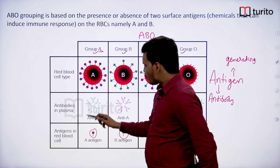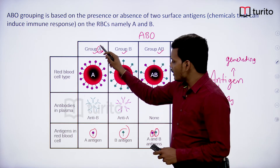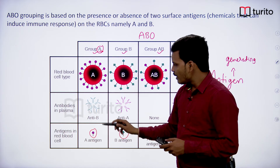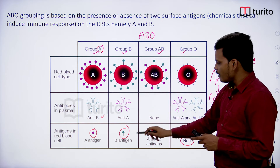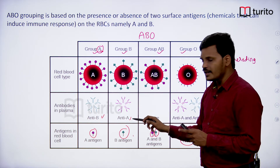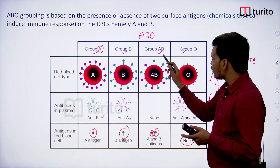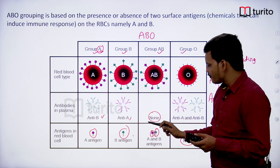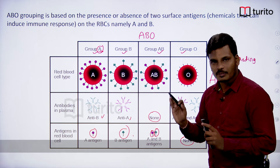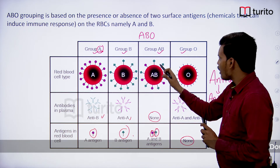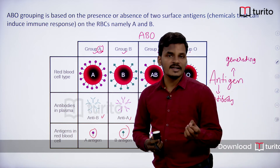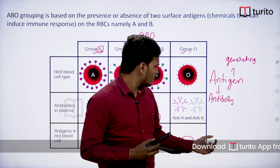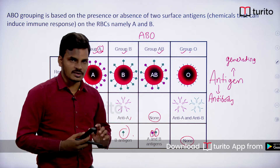For a person with blood group A, the antigen is A and the antibody present in plasma is anti-B. For blood group B, the antigen is B and the antibody is anti-A. When a person has both antigens — as in AB — there are no antibodies present for those antigens. For group O, as both antigens are absent, both antibodies — anti-A and anti-B — are present.